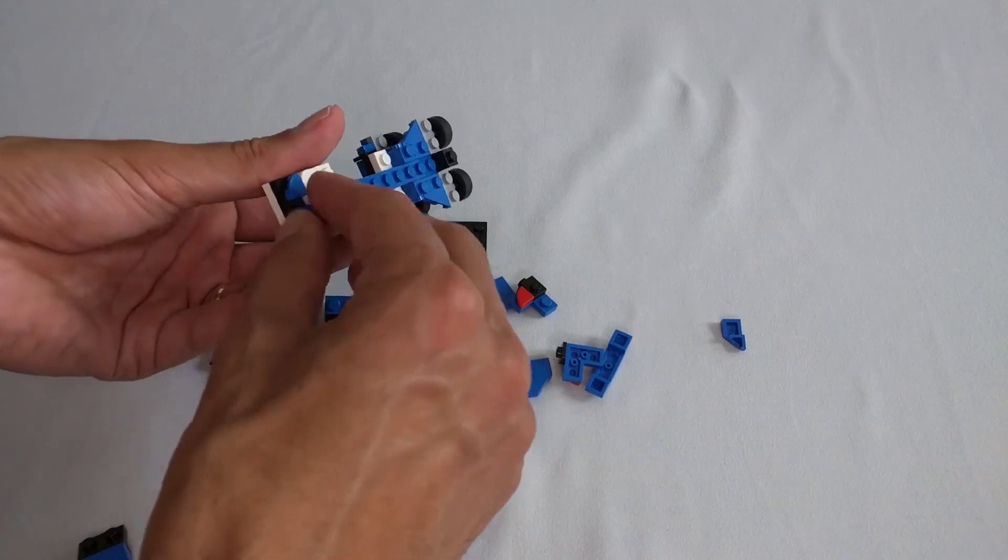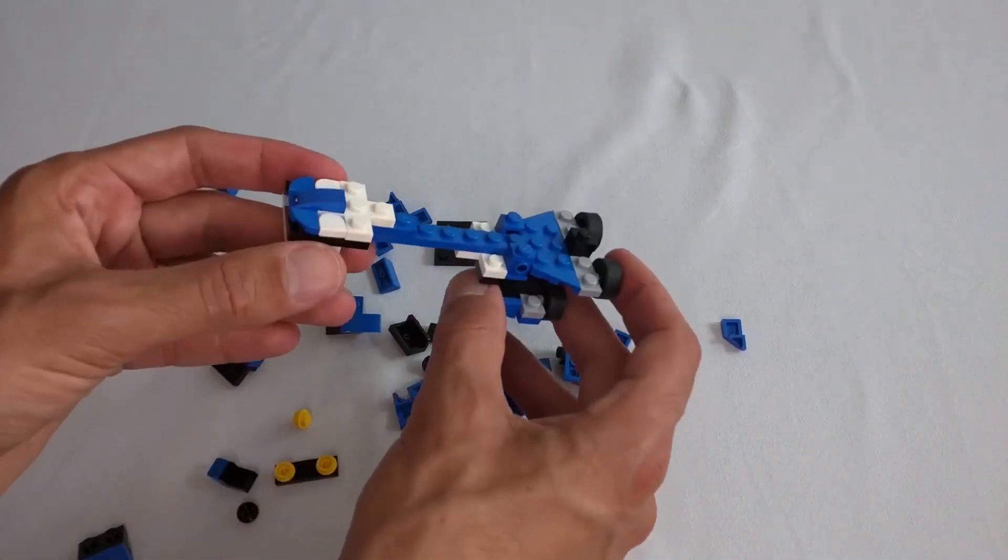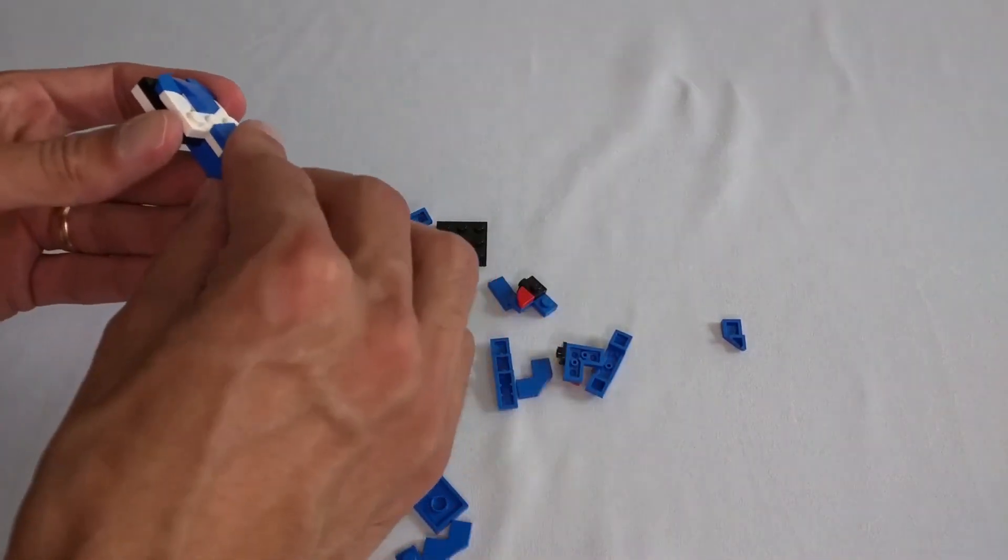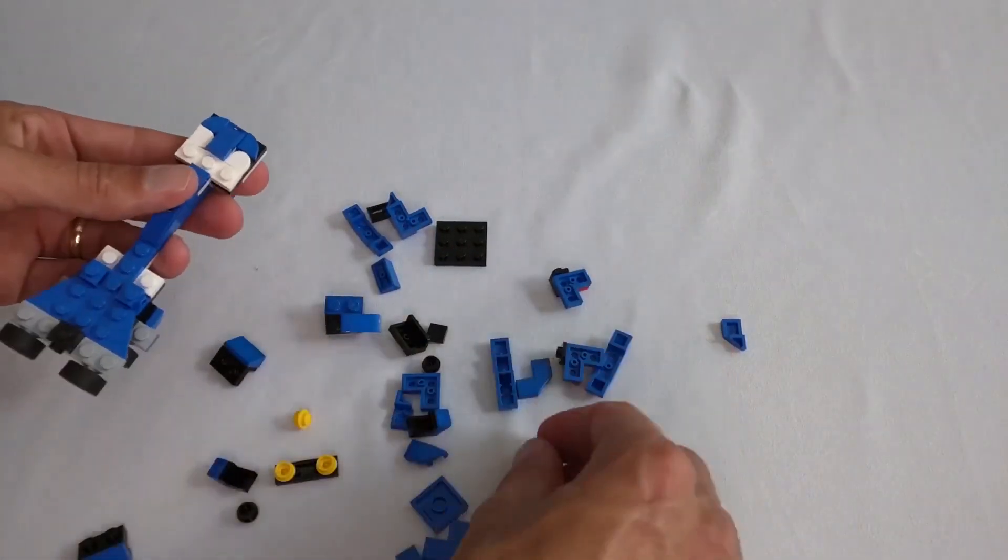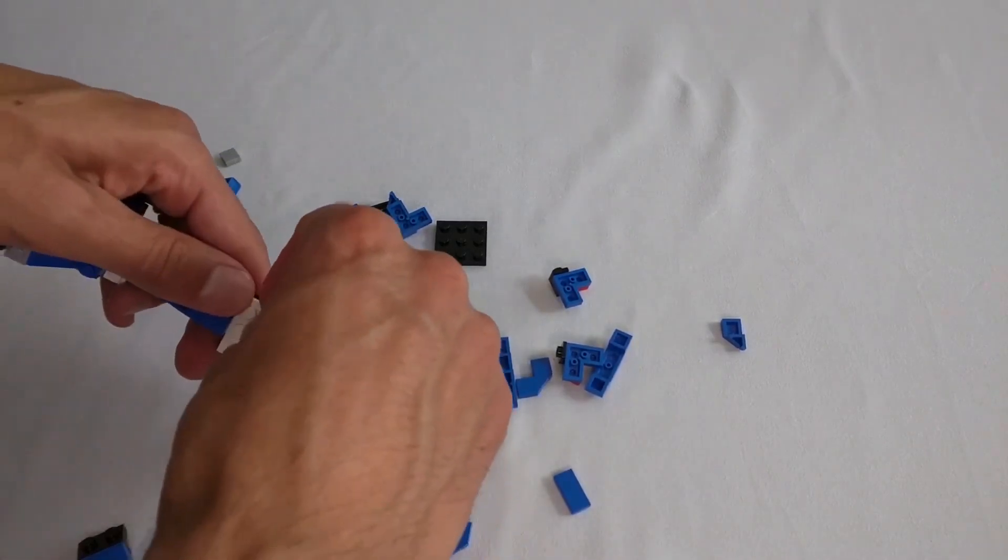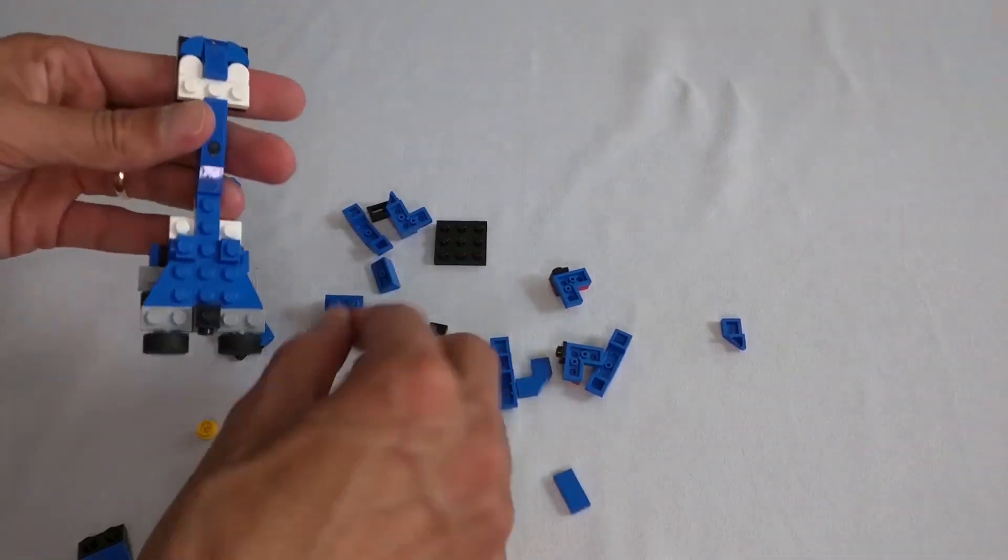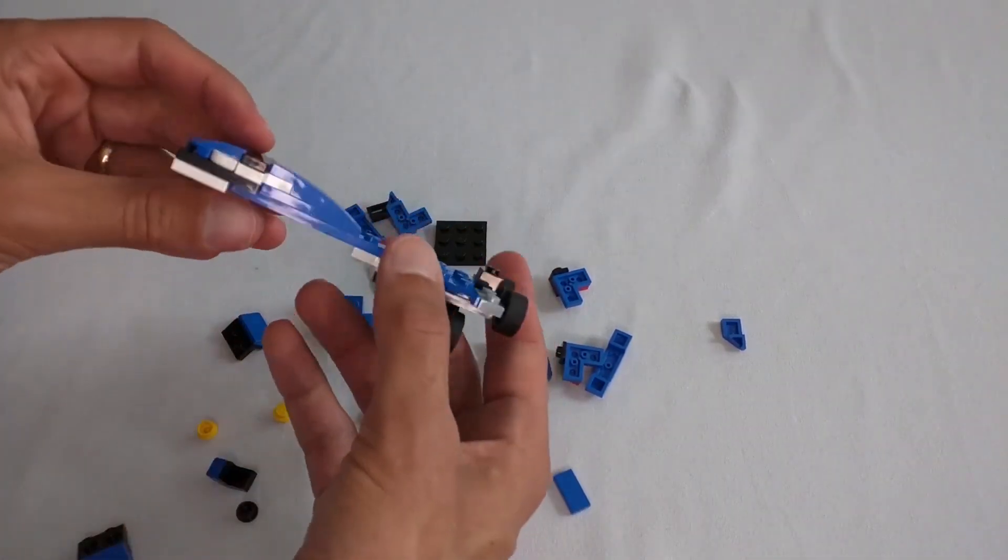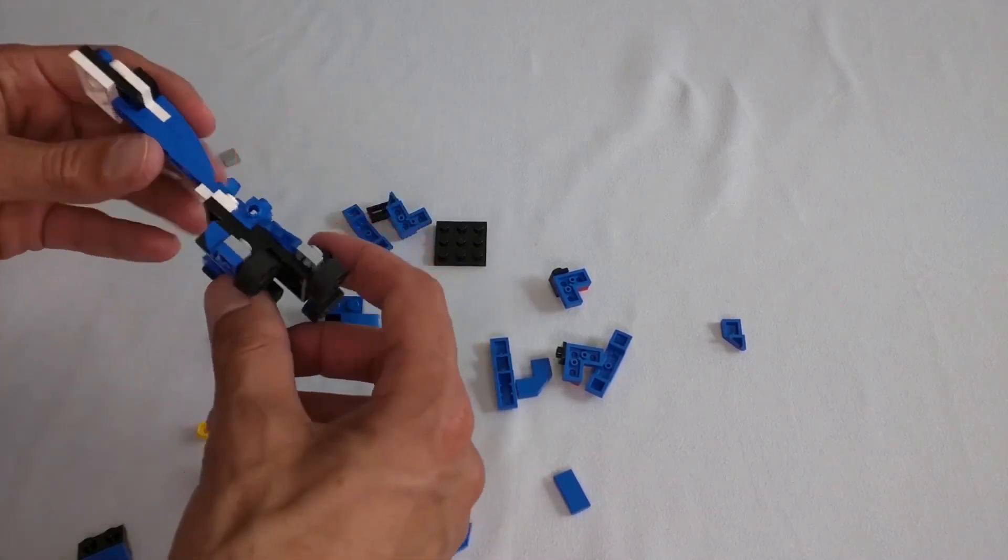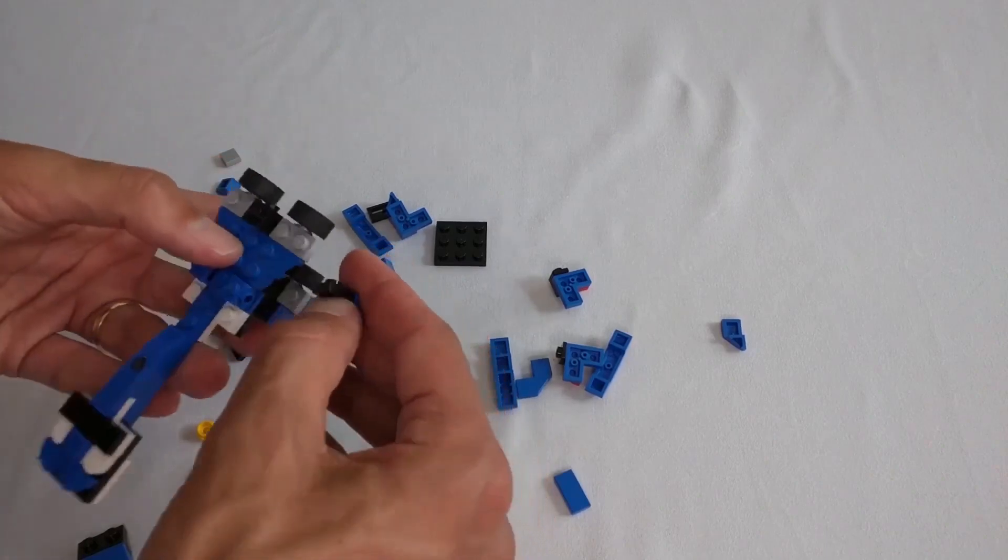Where did that piece go? There we go. So we got kind of a bridge going on right there. Looks good. Oh, that's on incorrectly. Put that on the same way. Add one of those. Yeah, that works. And we can add some more.